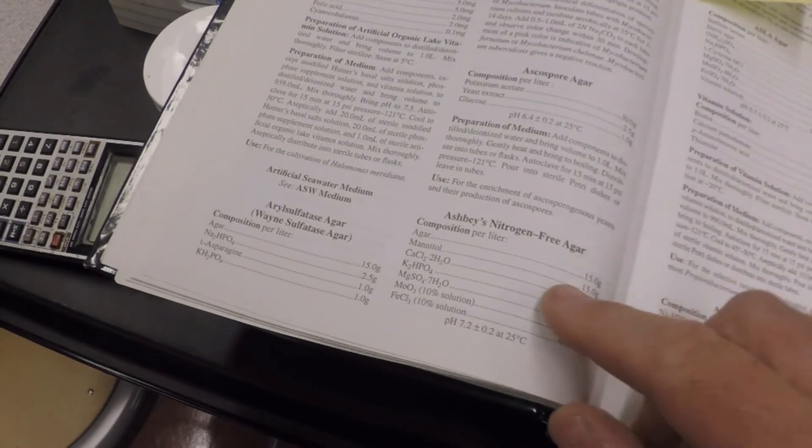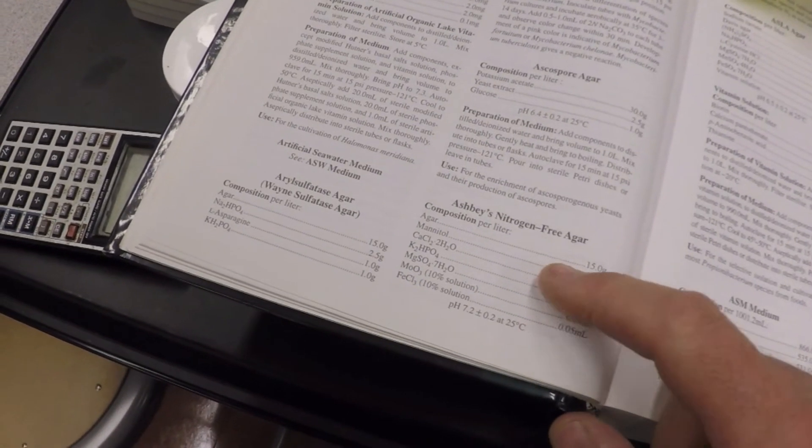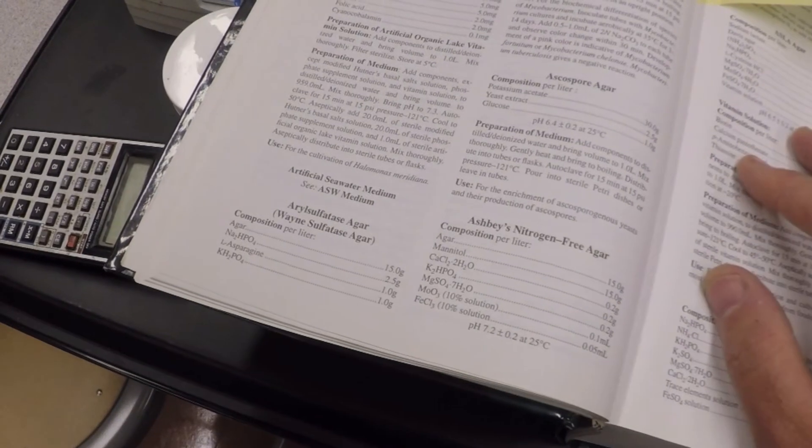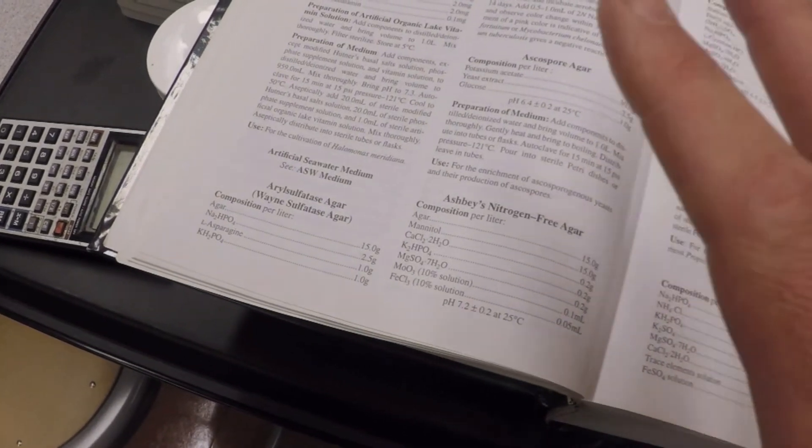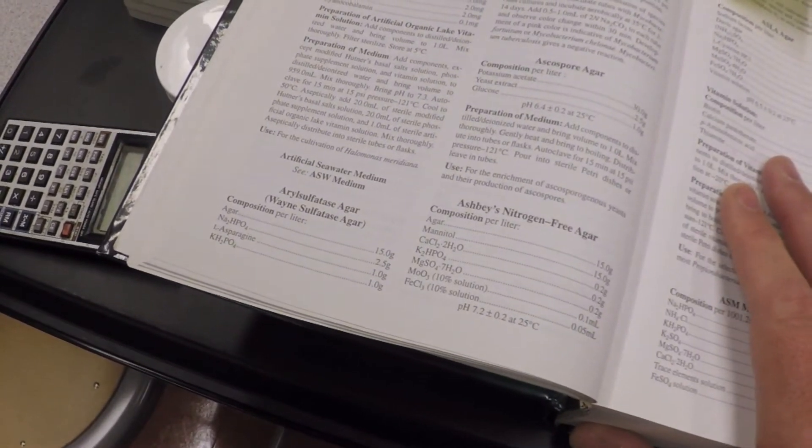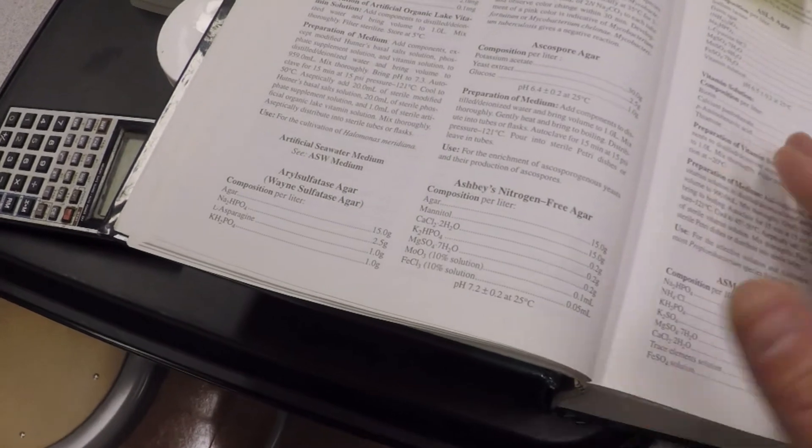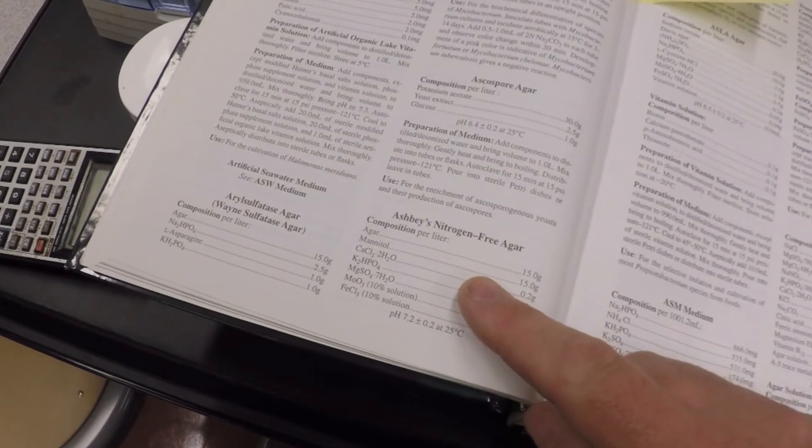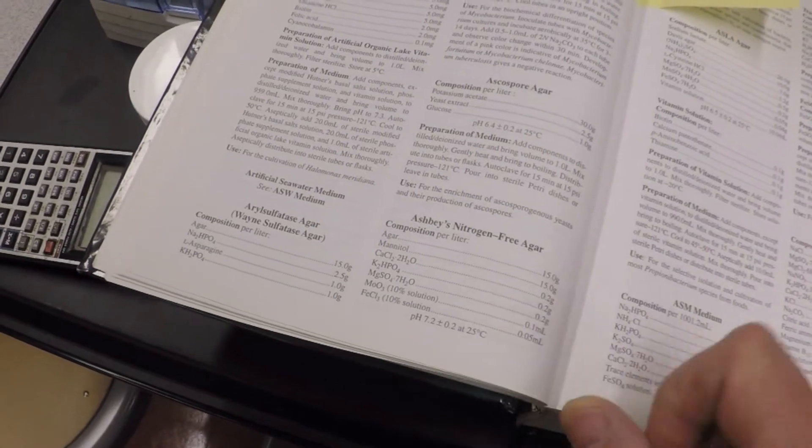The other thing we're going to do is add something called cyclohexamide to this, 100 micrograms per mil. That will try to kill off or get rid of some of the fungi that might be there. Because some fungi contaminates regardless of what you do. They're pretty hardy little suckers. What we'll do now is talk a little bit about the myxobacteria.